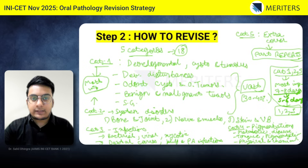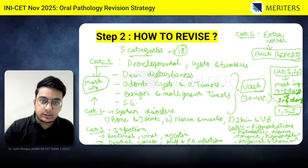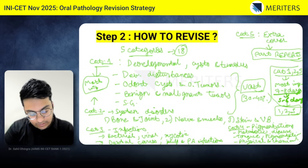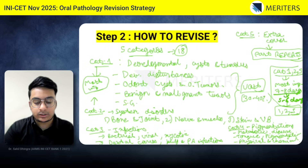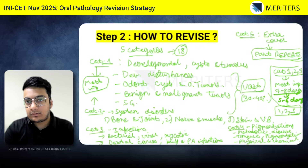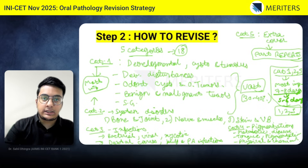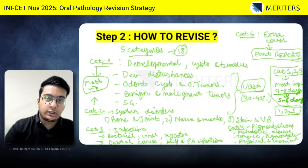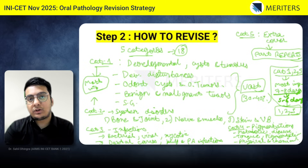If you study in this grouped manner, you won't forget things because you can correlate similar topics. For example, when studying bone, joint, nerve, and muscle diseases, you can do a comparative analysis. Similarly, for developmental disturbances, cysts, and tumours, you can compare features — remembering that a particular feature was in pleomorphic adenoma versus another tumour. The ideal method is to read in a tabular format using flowcharts and tables, comparing one disease or syndrome with another.